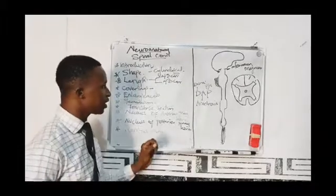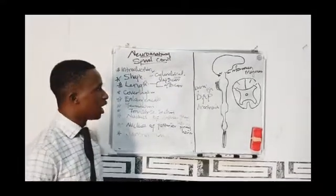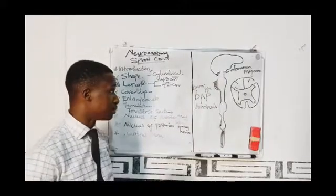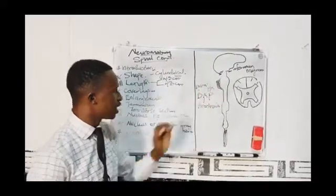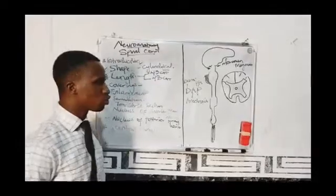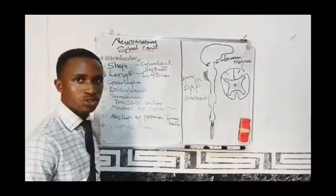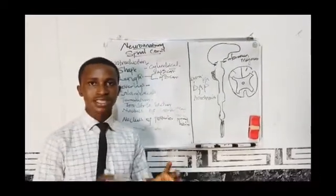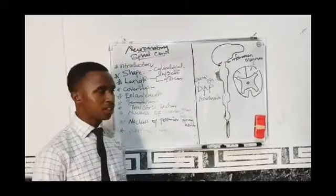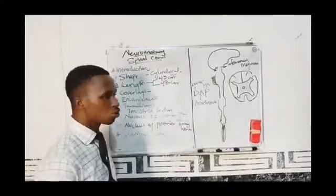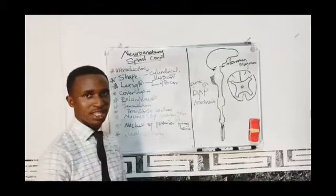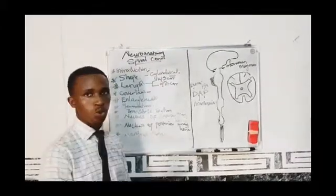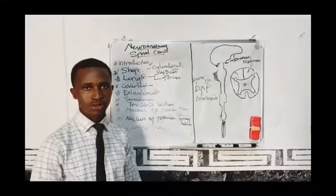An important point to note: apart from the dura mater, arachnoid mater, and pia mater — the meninges that help protect the spinal cord — we also have the vertebral bones. The vertebral bones are 33 in number. These bones also help to protect the spinal cord, so the spinal cord lies within the vertebral bones.